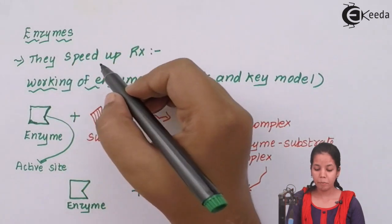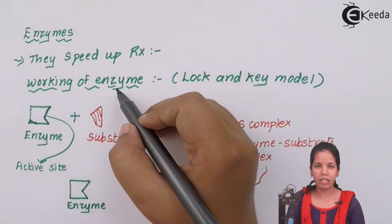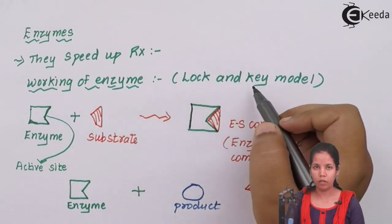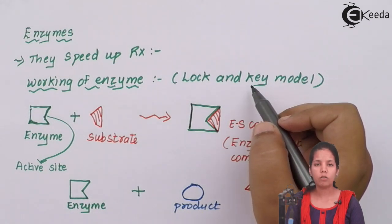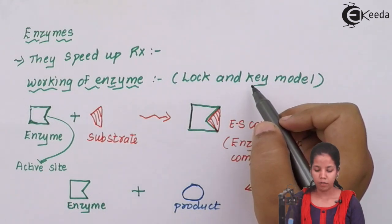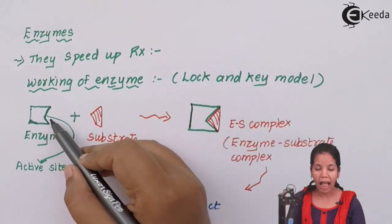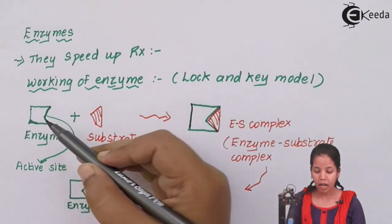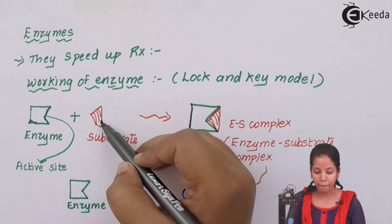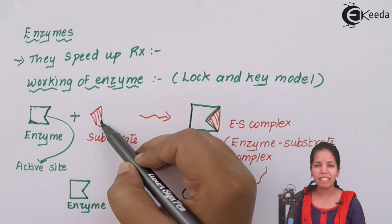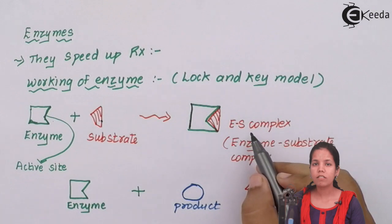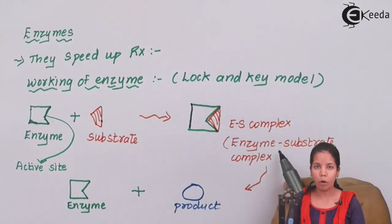Enzymes speed up the reaction process. Working of enzyme is enzymes basically function as lock and key model. For example, for a particular lock, there is one key. Similarly, for a particular substrate, there is only one enzyme present or there is a family of enzymes that is present. Enzymes work in a certain manner. An enzyme has an active site and to this active site, a substrate will bind. When a substrate binds to the enzyme on its active site, it forms ES complex or enzyme-substrate complex.